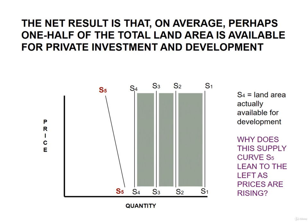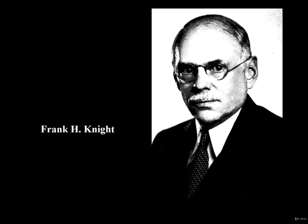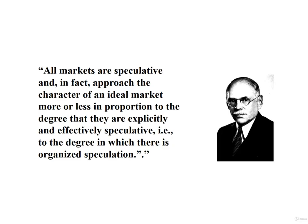Now, at that point, a somewhat strange-looking supply curve, S5, appears. The curve is leaning to the left, which is an indication that even as the price for locations is rising, the quantity of land potentially available for development is falling. The reason is that the expectation of even higher prices is an incentive for owners of land to withdraw their land holdings from the market. On the general subject of speculation, Frank Knight expresses the widely taught view that all markets are speculative and in fact approach the character of an ideal market more or less in proportion to the degree that they are explicitly and effectively speculative — that is, to the degree in which there is organized speculation.